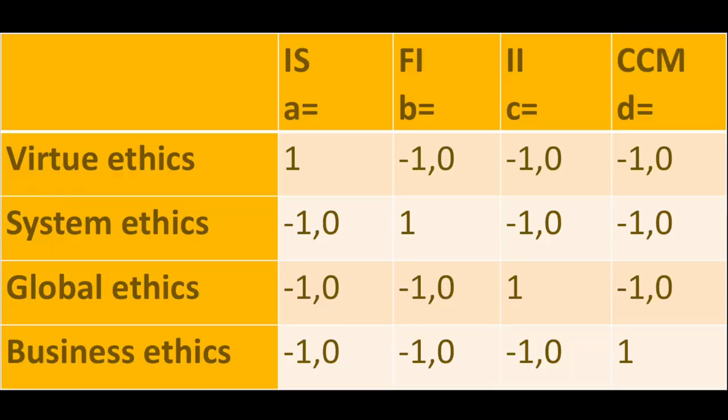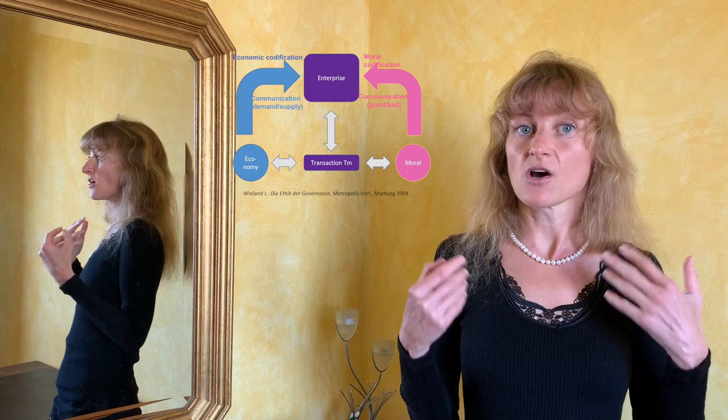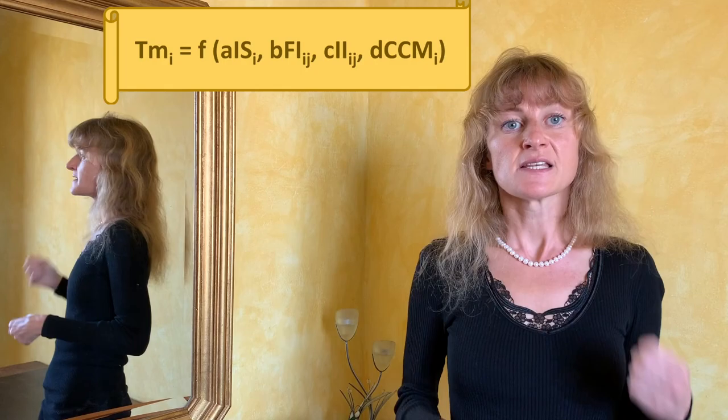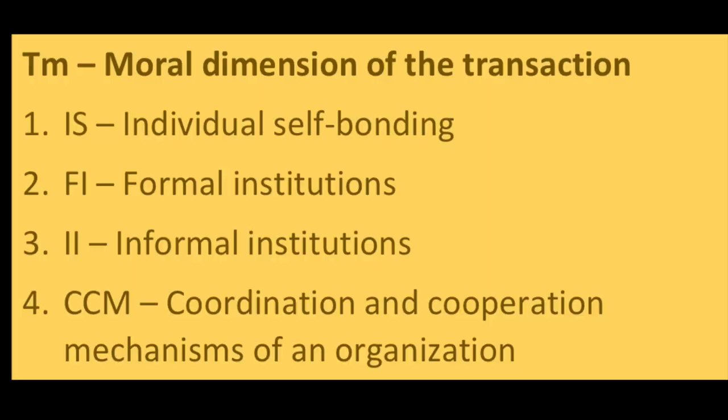To summarise, according to Wieland, each transaction has its moral dimension and you, as the organisation, have to see to which extent there are mechanisms which secure it. He differentiated four factors: self-bonding mechanisms, formal and informal institutions, and cooperation and coordination mechanisms. All four factors build a starting point for various approaches to ethics — virtue, system, global and governance ethics. For Wieland, the most effective approach which the company has impact on is CCM — coordination and cooperation mechanisms — which may be introduced by business ethics codes, for instance. Thank you.